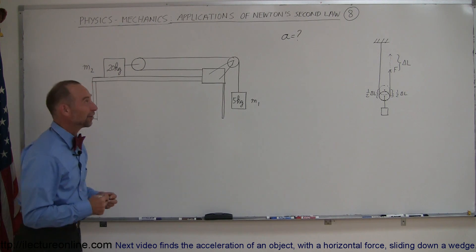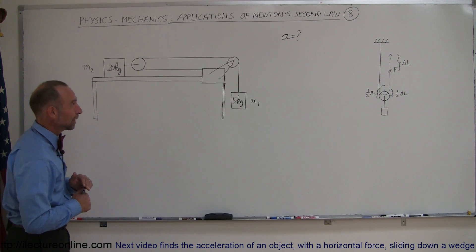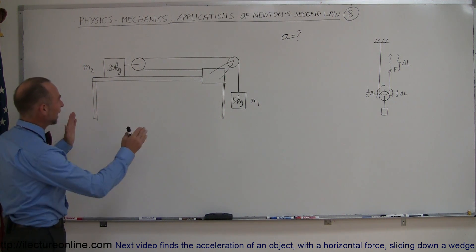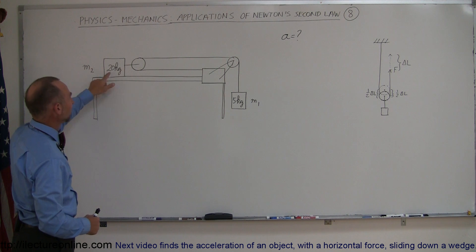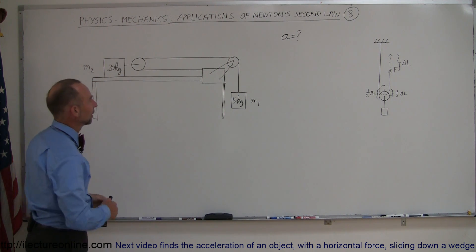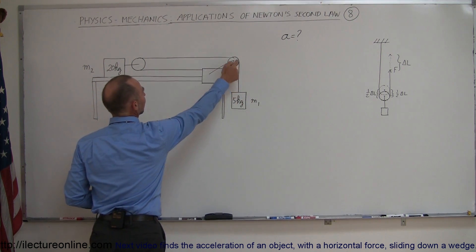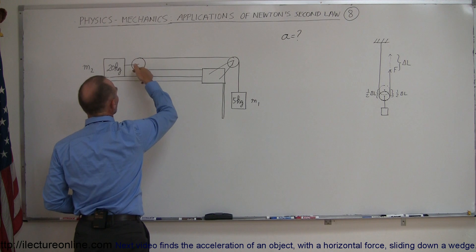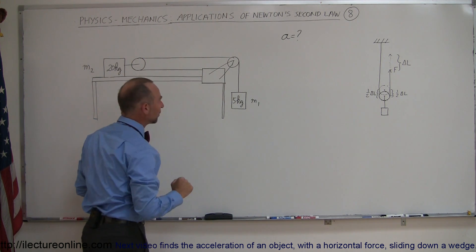Here's a very interesting example and a good application of Newton's second law. We have a table, on the table we have a heavy mass of 20 kilograms attached to a pulley. We have another small mass attached to a pulley as well. This single string goes across one pulley, around the other pulley, and is attached to a block which is attached to the table.